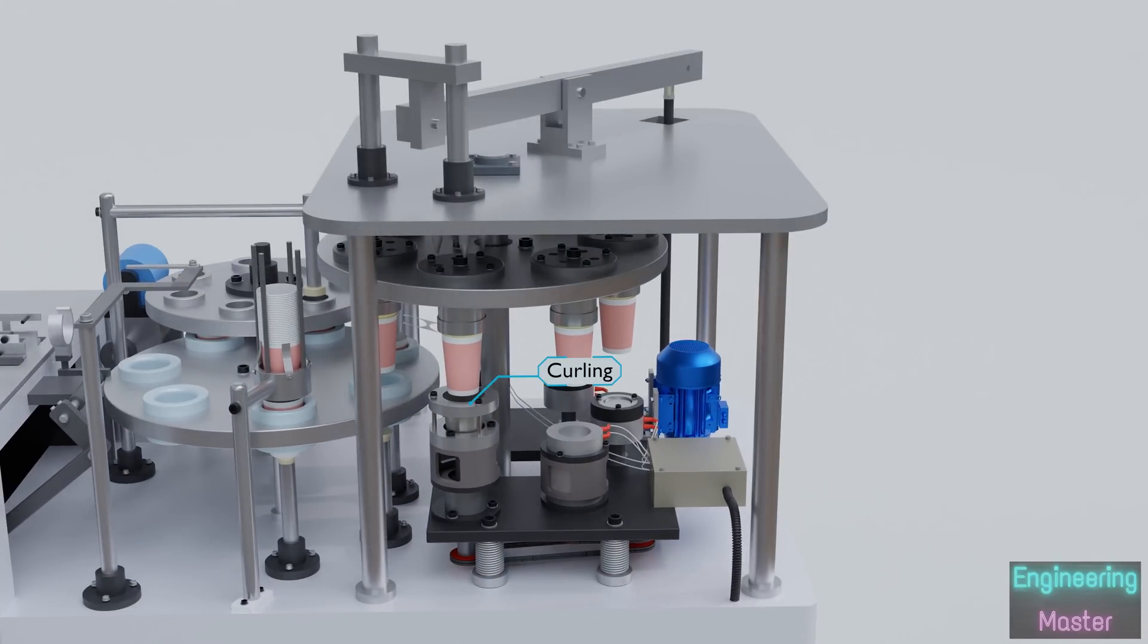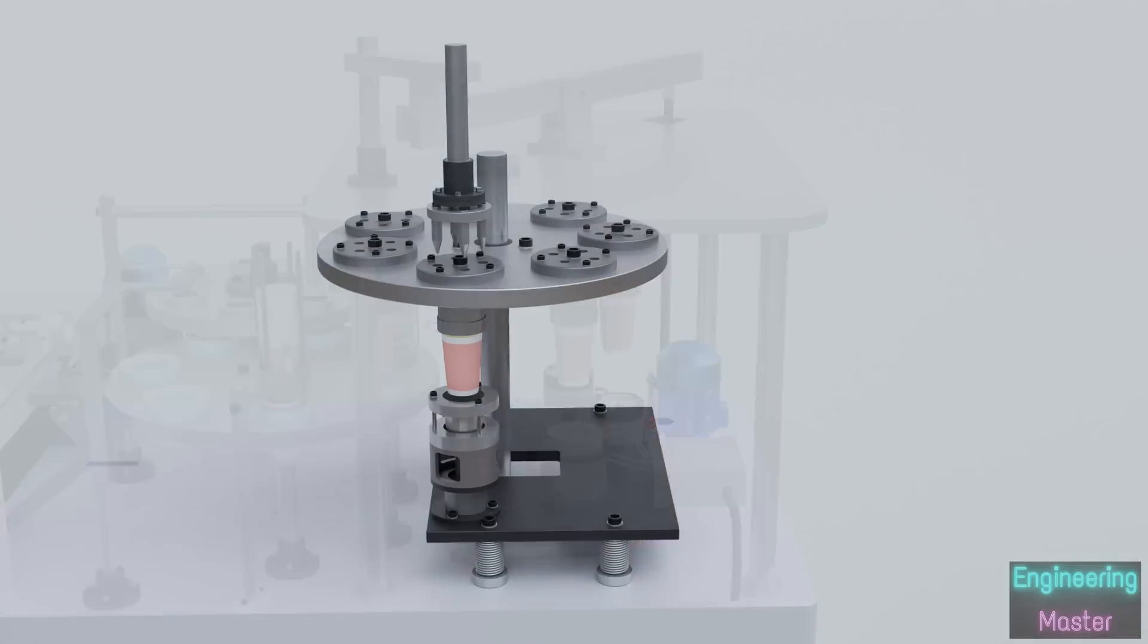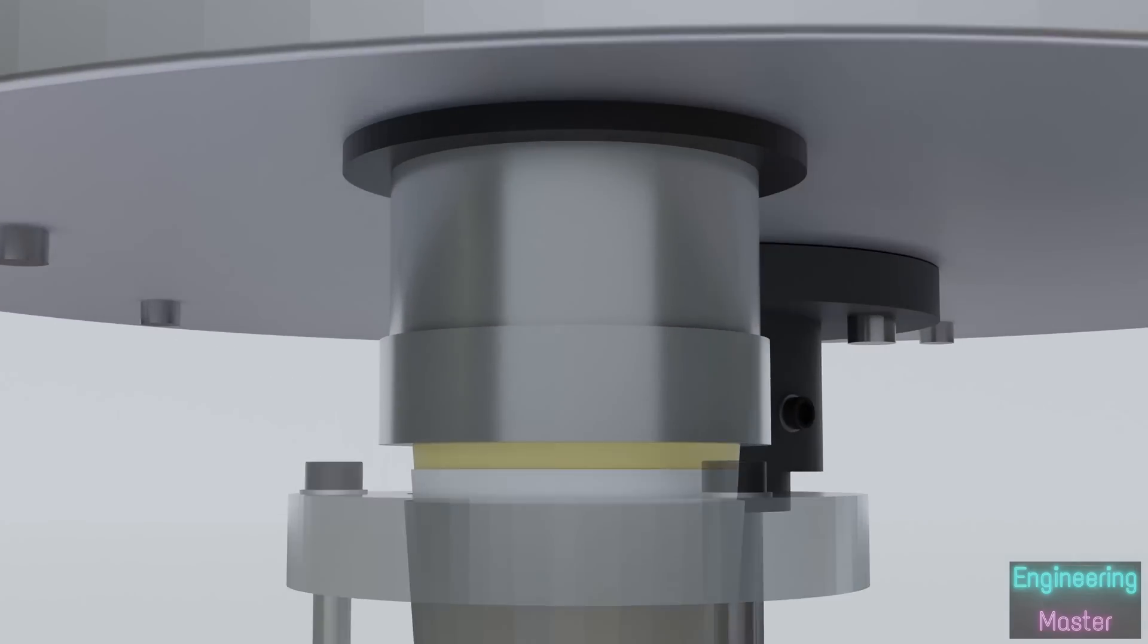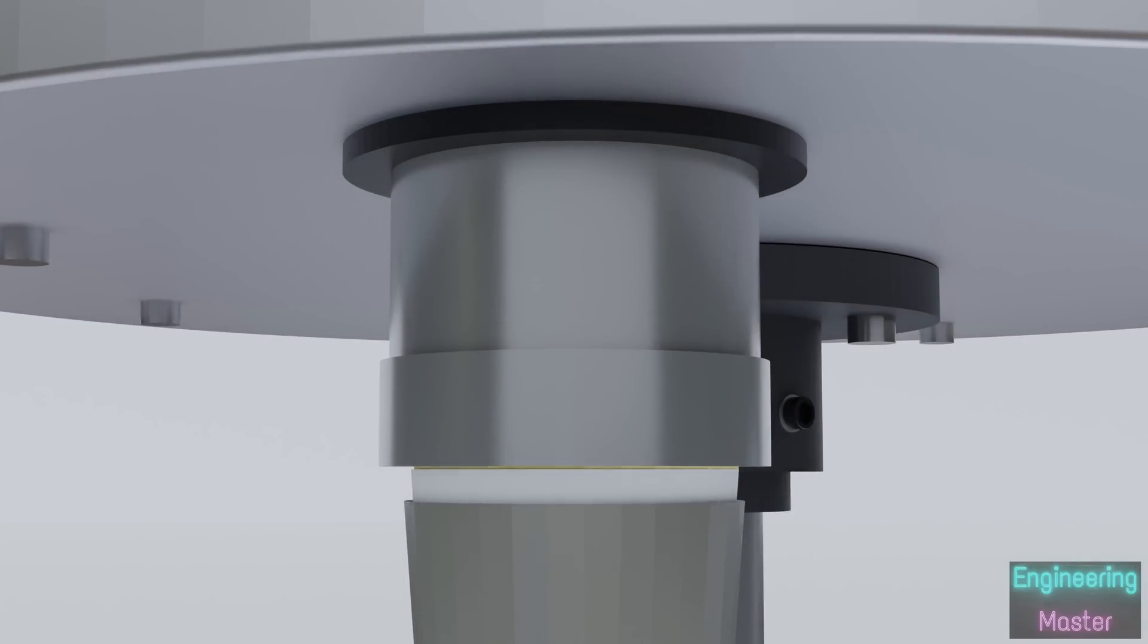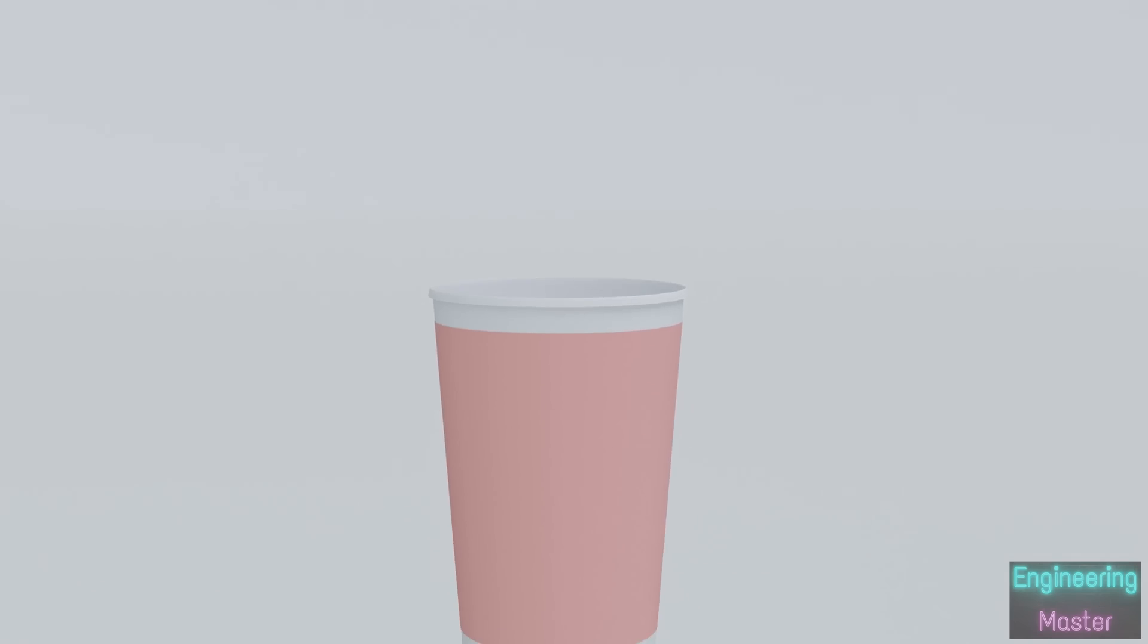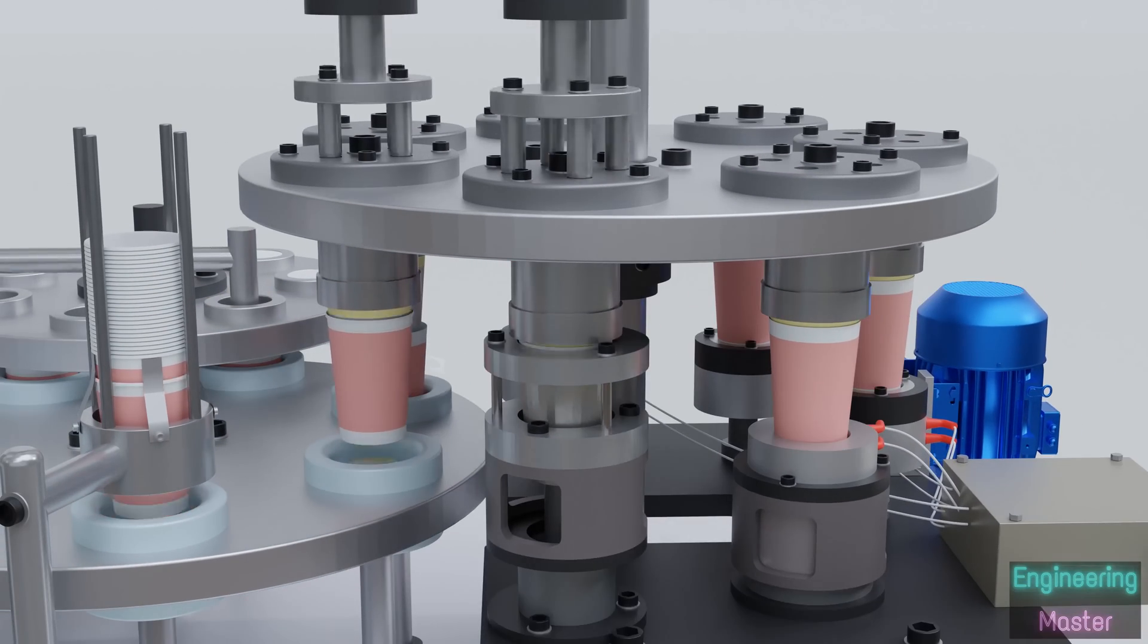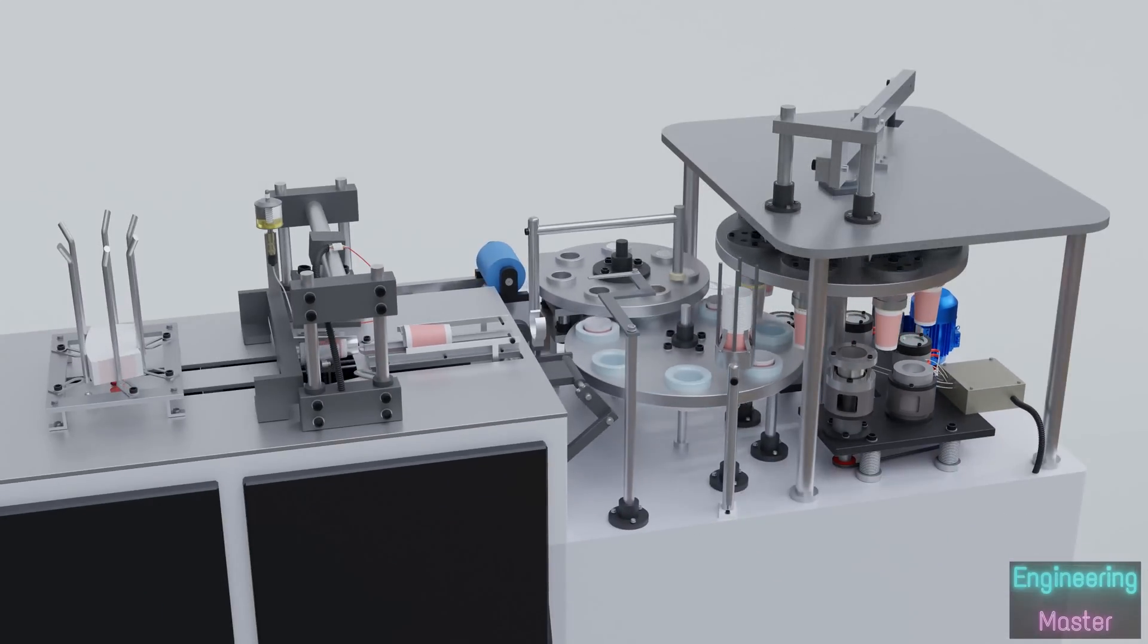The final process is curling. In this process, the top rim of the paper cup is curled outward to form a reinforced edge. During the process, the paper cup is rotated and the rolling disc pushes the edge of paper cup outward. This process forms a round lip at the top edge. Finally, the finished product is collected.